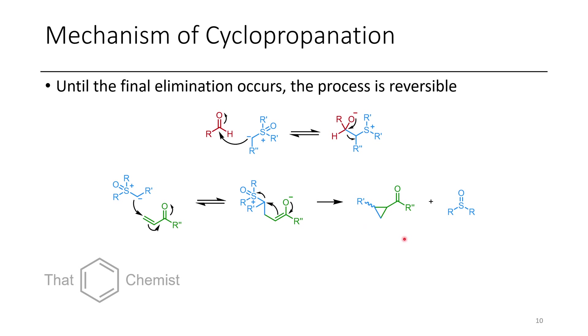Once this adds in a 1,4 fashion, we don't typically see additional addition to form an epoxide. I'm not totally sure why that is — it could be due to steric effects, or it might be something controlled through equivalents of reagent used.